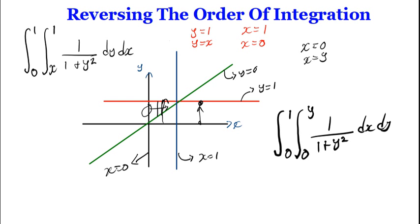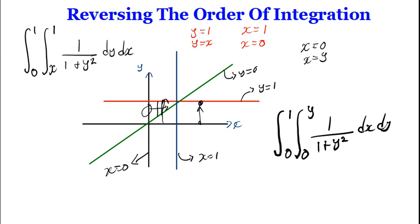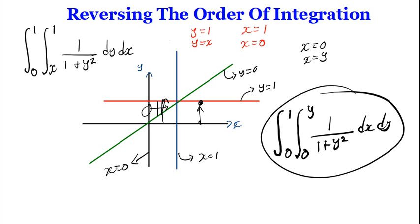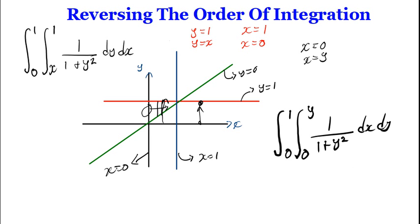This is basically how you reverse the order of integration. It's very important to sketch the region and understand how the original limits were obtained, then use that same thinking to find the new limits. The integrand doesn't change — only the limits and the order of integration change. That will be all for this video; thank you for watching.